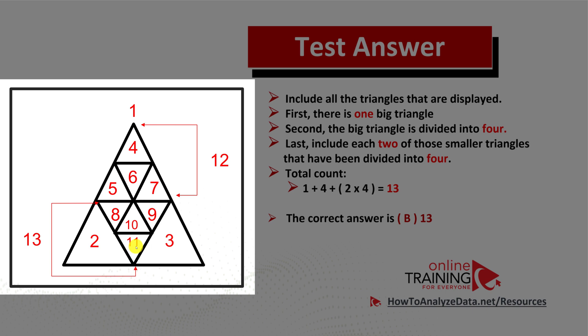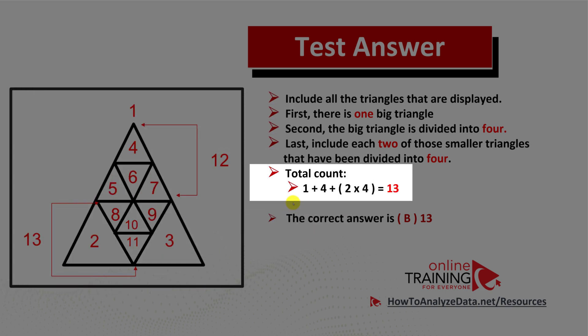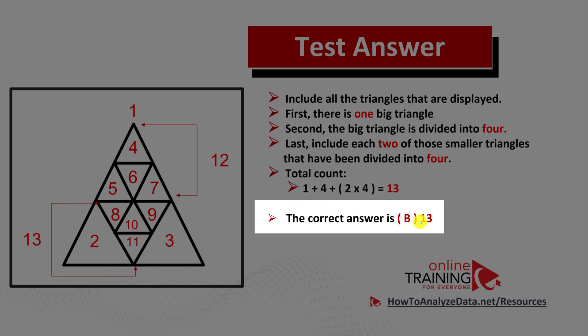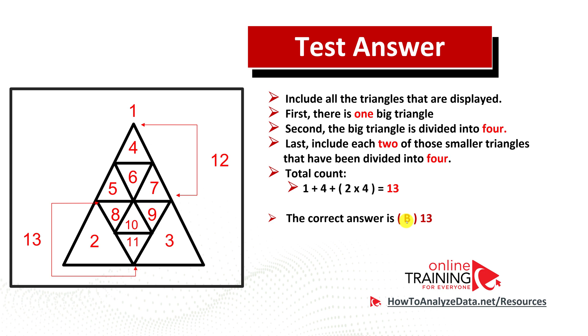And as a last step, we include remaining smaller triangles that have not been counted in the first place. So the correct answer is 1 plus 4 plus 2 by 4, which is equal to 13. So the correct choice here is choice B, 13. The key to answering this question is to make sure you did not miss any of the triangles shown in the picture.